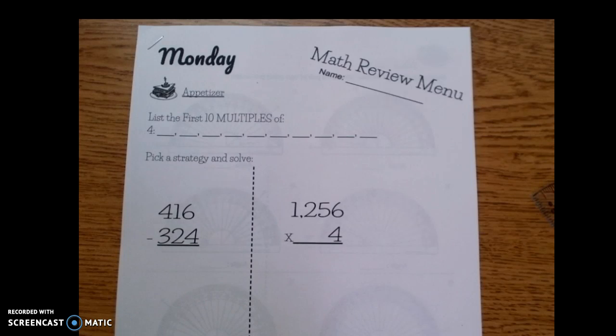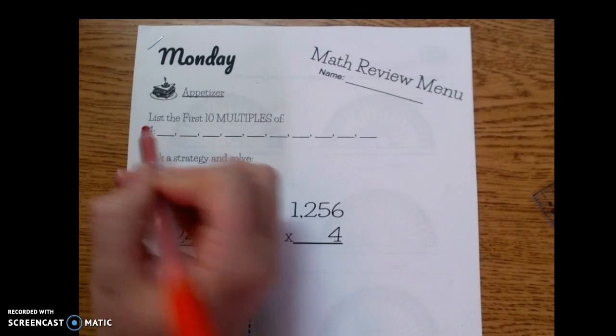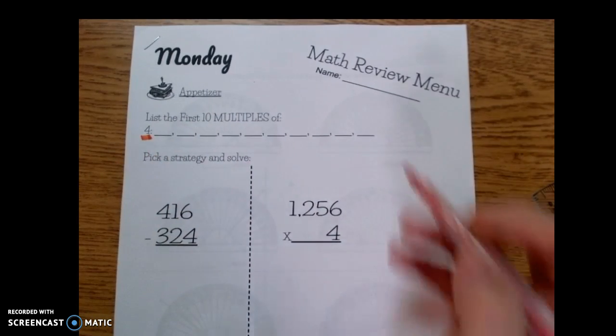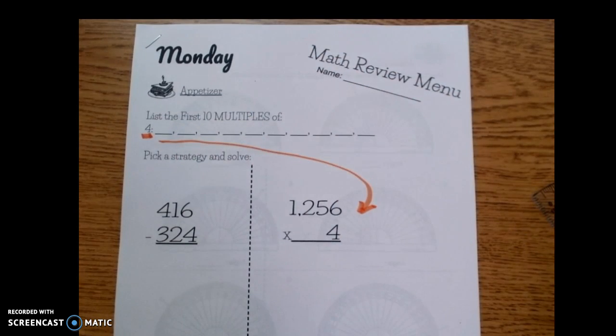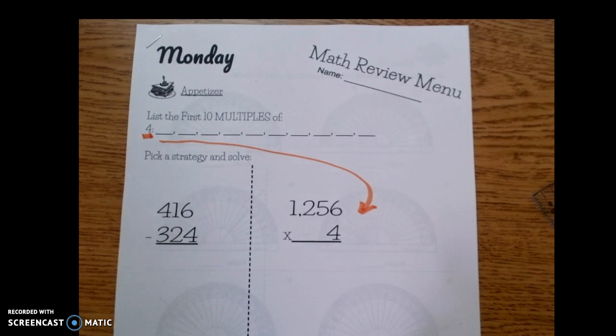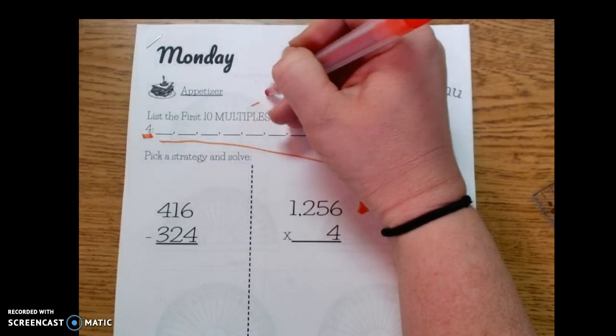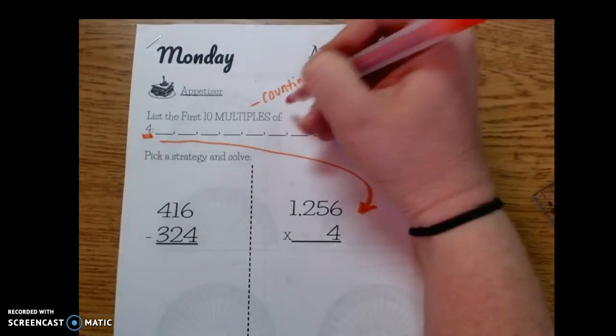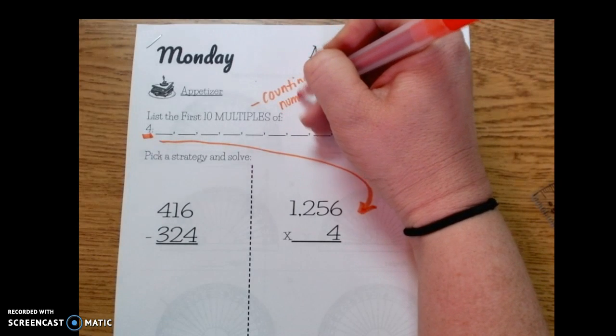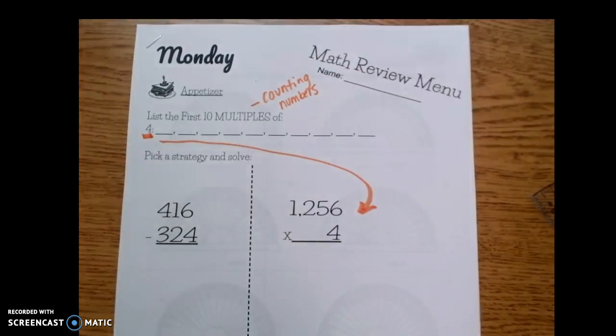All right, so the first thing that we're going to be doing all week is we're going to be doing multiples. We've asked you to list the multiples of 4, and you'll notice that down here when you do your multiplication we're helping you out there because we are going to be multiplying by 4. Remember that multiples are counting numbers, and anything I write on my paper you should be writing on yours.